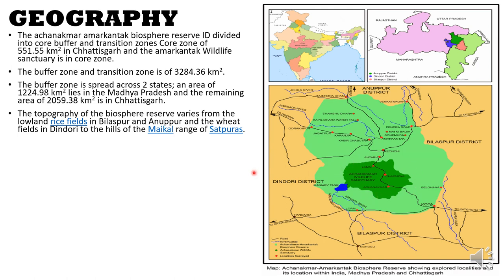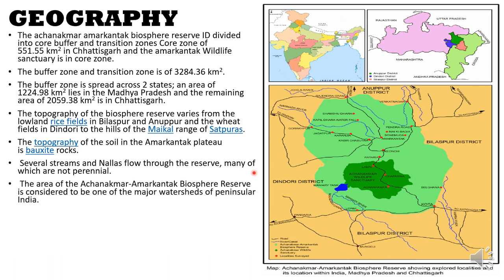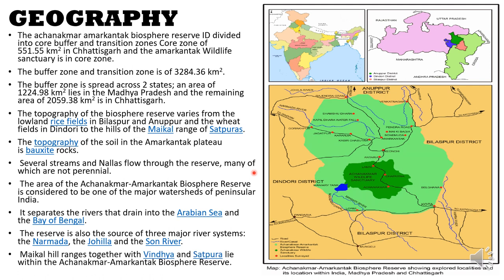The topography of the Biosphere Reserve varies from the lowland rice fields in Bilaspur and Anuppur Districts and wheat fields in Dindori, to the hills of the Maikal Range and the Satpuras. The soil topography includes bauxite rocks, and several streams and nalas — which are drainage channels — flow through the reserve, many of which are not perennial. The area is considered one of the major watersheds of peninsular India, separating rivers that drain into the Bay of Bengal and the Arabian Sea. The reserve is also the source of three major river systems — the Son River, Johilla, and the Narmada River. The Maikal Hill Ranges together with the Vindhya and Satpura ranges lie within the reserve, and they are important from the perspective of the Narmada and Tapti Rift Valley.